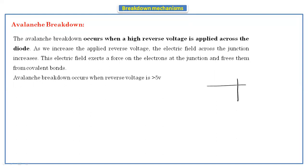In the reverse bias characteristics, at greater than 5 volts, this avalanche breakdown will occur. Generally, avalanche breakdown occurs in the PN junction diode. Up to a certain voltage the breakdown of the diode takes place, and that's why this is called avalanche breakdown.